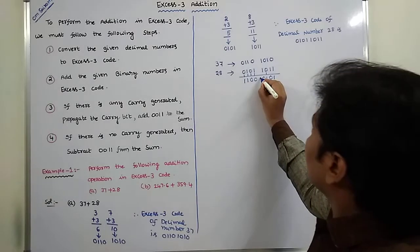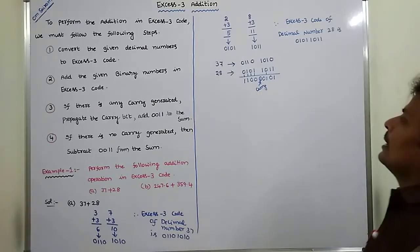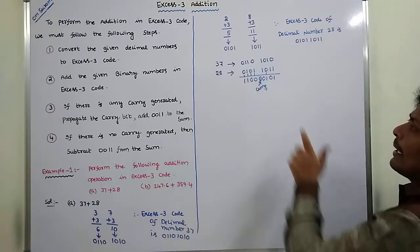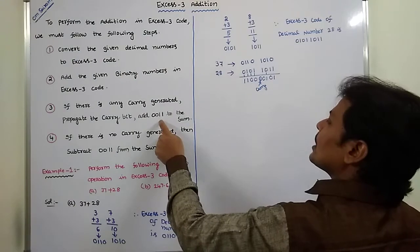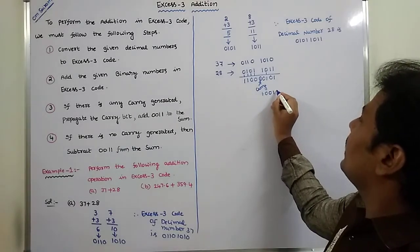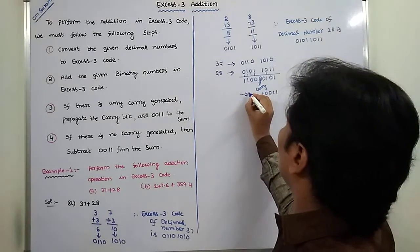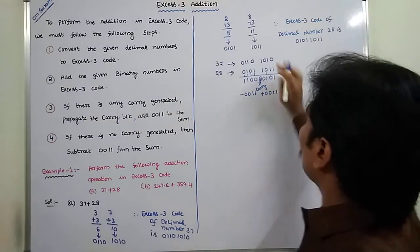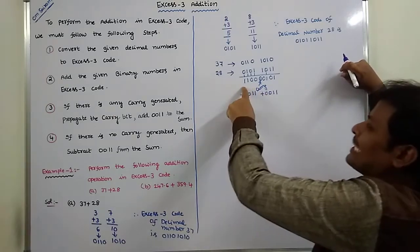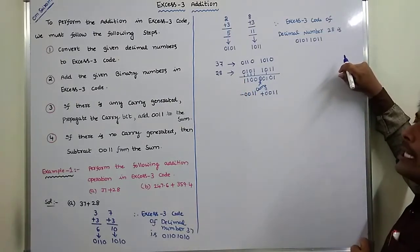This carry is generated — this is the carry bit. Next step: if there is any carry generated, propagate the carry bit to the next higher 4-bit group and add 0011 to the given sum. Here a carry is generated, so we add 0011. For the group where there is no carry generated, we subtract 0011.